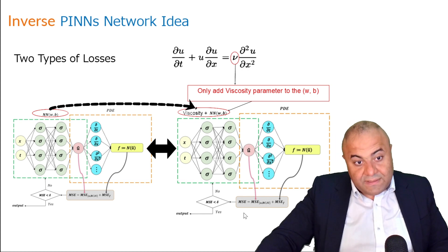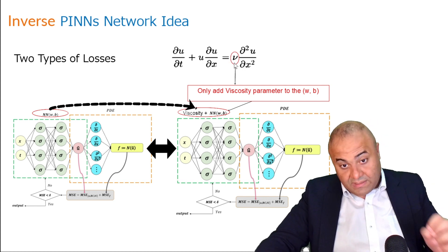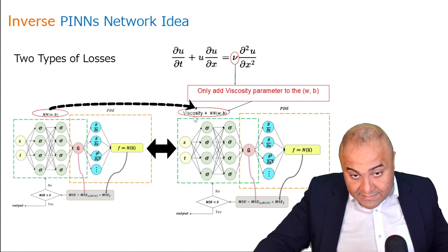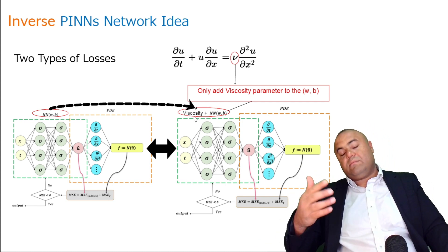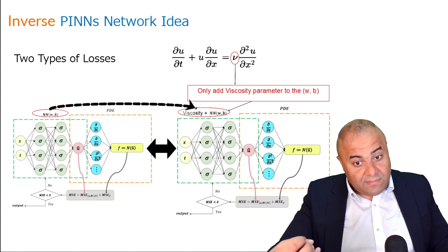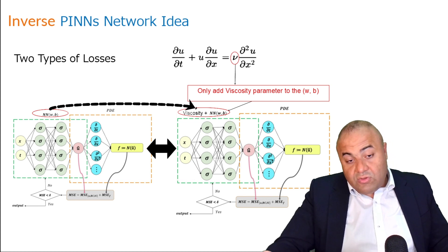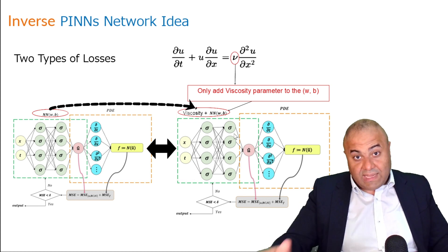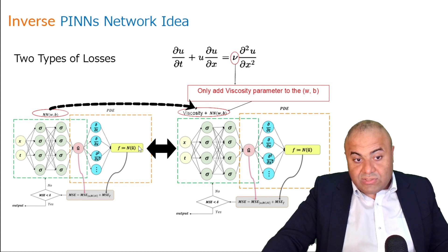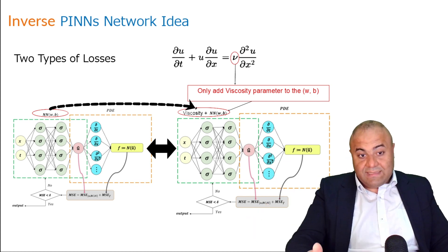What do we mean by modifying it? Because this time we need to predict an actual parameter — in Burgers' equation, the viscosity — we need to add the viscosity parameter to all the other parameters that the optimizer is going to optimize. Usually in any neural network, as it trains, we match the weights and biases to predict the target relationship.